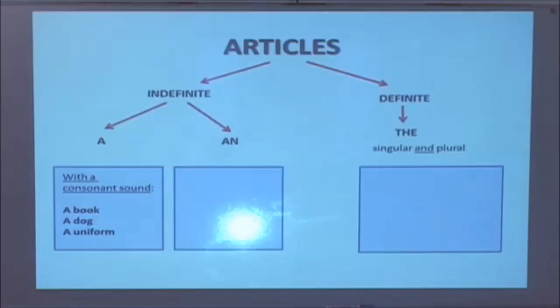The indefinite article a is used with a consonant sound, for example, a book, a dog, a uniform, whereas the indefinite article an is used with a vowel sound, for example, an uncle, an orange, an owl.